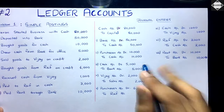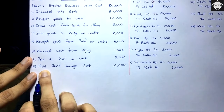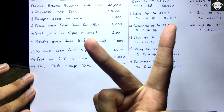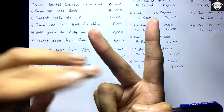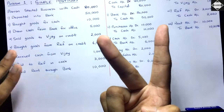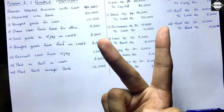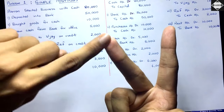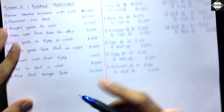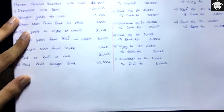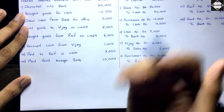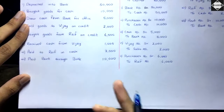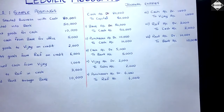Last transaction: paid rent through bank 10,000. Rent is an expense account — it has a debit balance. The expense is increasing. Bank Account is decreasing because you paid through bank. The entry is: Rent Account debit 10,000, to Bank Account 10,000. Expense increases so you debit it, and your asset bank balance decreases so you credit it. If you had paid through cash, the entry would be Rent Account debit to Cash.